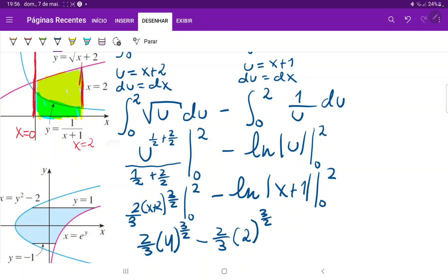And on the other side we do have minus ln 2 plus 1, which is 3, and then minus minus, we do have a plus, plus ln of 0 plus 1, which is ln of 1, which is 0. But I'm going to write this so that we can keep track of what we did.